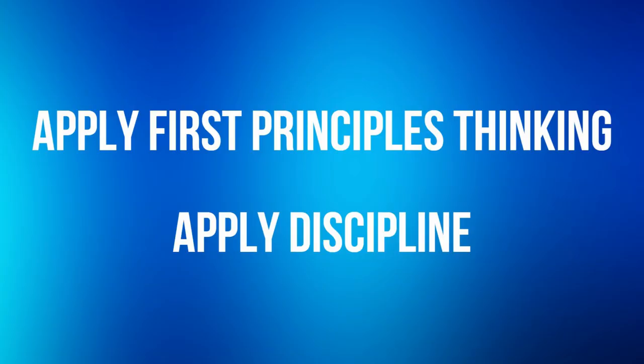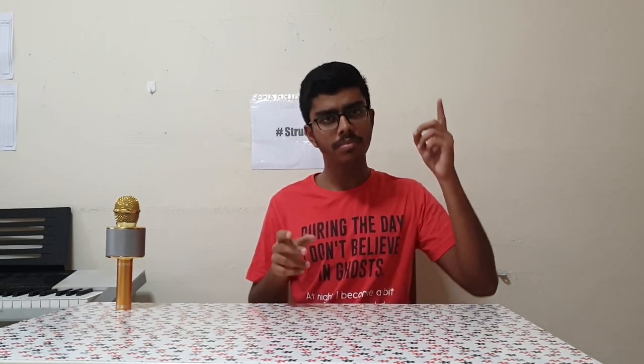What is next — what can I do about it? Number three: apply these two things to achieve success. Number one, first principles thinking. Number two, discipline. What is first principles thinking? I did cover first principles thinking in a previous video — it's something embodied by Elon Musk, so do click the link above to look at that video where I explain in detail what first principles thinking is.